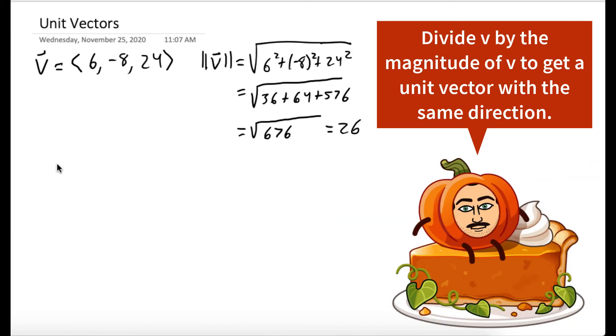So the unit vector in the same direction as v, which we'll call v hat, is equal to 1 26th of the vector we started with.